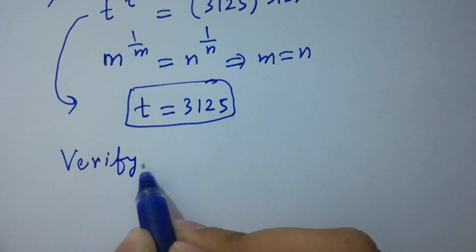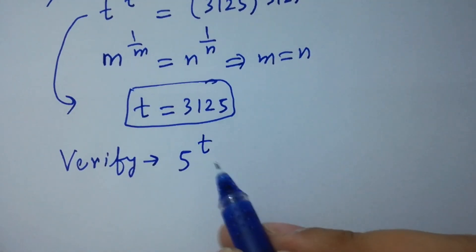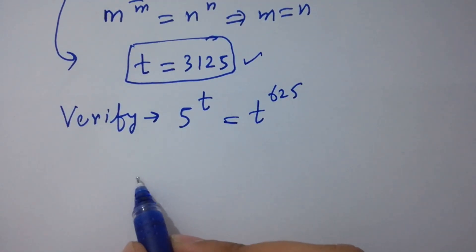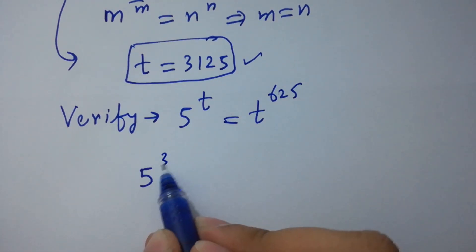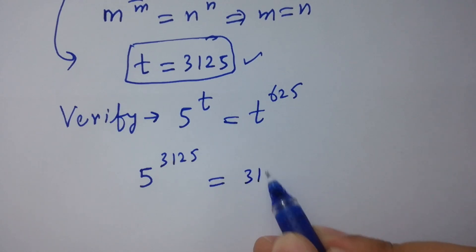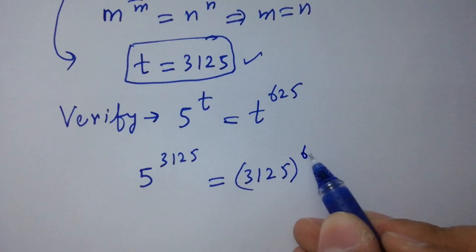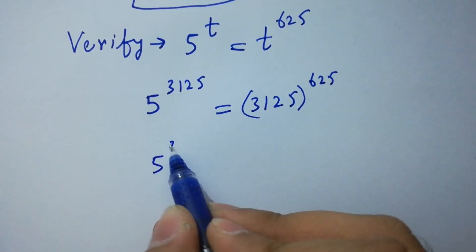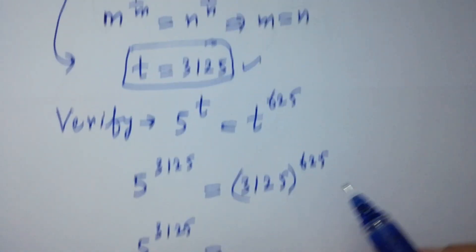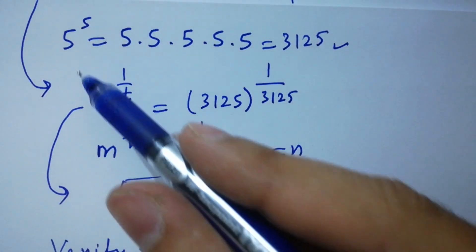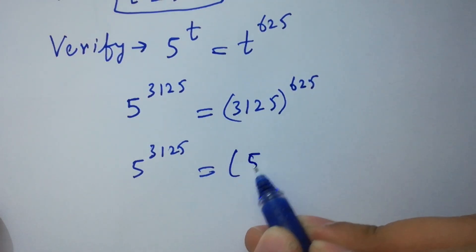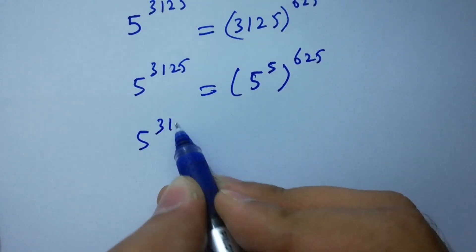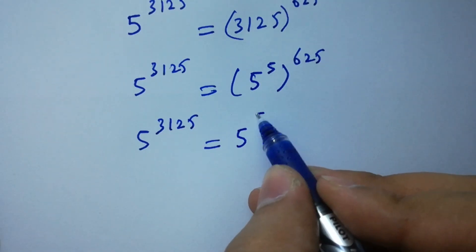Now let's verify: 5 to the power t equals t to the power 625. Putting the value of t, we have 5 to the power 3125 equals 3125 to the whole power 625. On the right hand side, since 3125 equals 5 to the power 5, we can write 5 to the power 5 raised to 625. So the right hand side becomes 5 to the power 5 times 625.